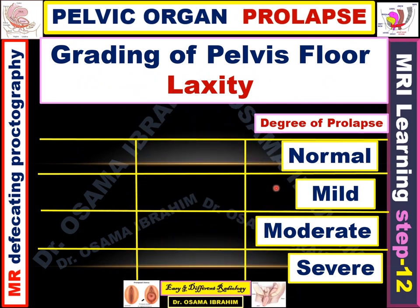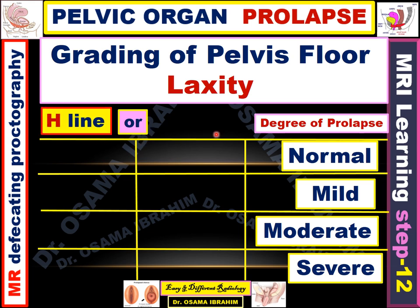Today my presentation has a lot of scientific data — just follow with a little concentration to the end, and I promise we will together build up our understanding of the definitions of rectocele, cystocele, and uterine prolapse. The grading of pelvic floor laxity in general is classified from normal to severe according to the measurements of the H line and M line. So H line and M line help us detect the degree of prolapse: normal, mild, moderate, or severe.